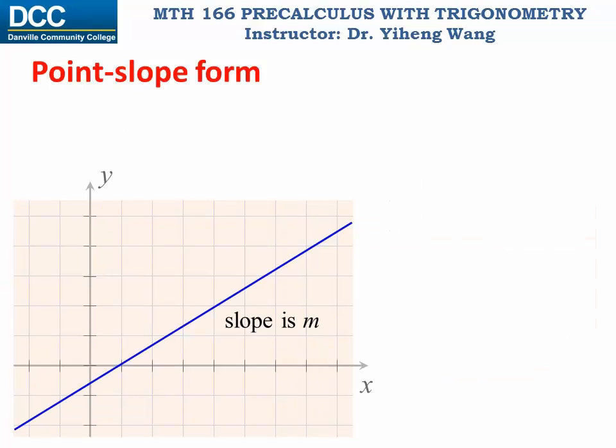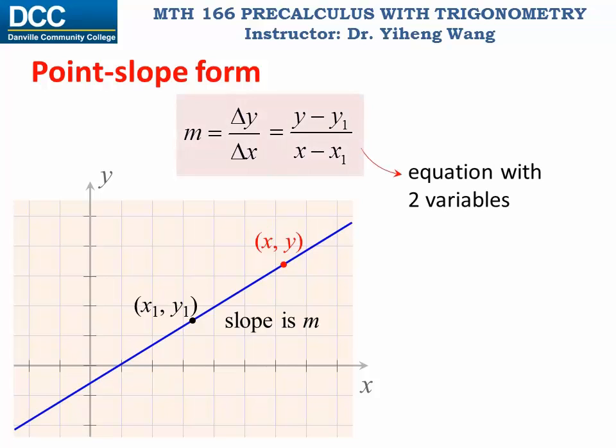If we know the slope of a line, but we don't know the y-intercept, we can still write the equation of this line if we know the coordinates of at least one point on this line, say point x1, y1. Then for another arbitrary point x, y on the same line, this is always true because of the definition of the slope.